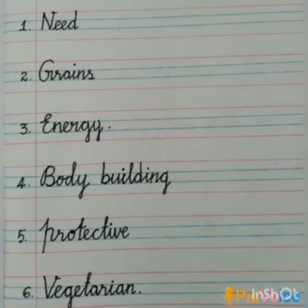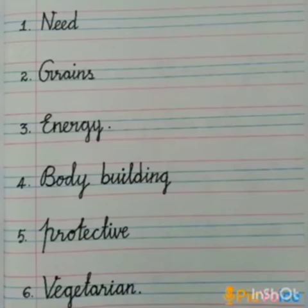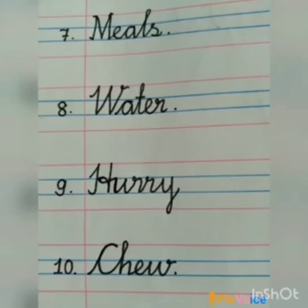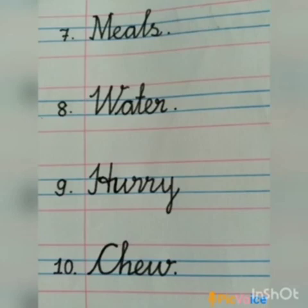Fifth one: Protective — P, R, O, T, E, C, T, I, V, E. Protective. Sixth one: Vegetarian — V, E, G, E, T, A, R, I, A, N. Vegetarian. Seventh one: Meals — M, E, A, L, S. Meals. Eighth one: Water — W, A, T, E, R. Water. Ninth one: Hurry — H, U, R, R, Y. Hurry. And last one: Chew — C, H, E, W. Chew.